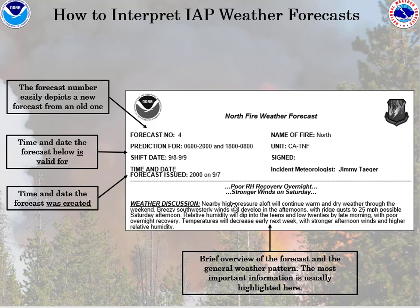The time and date the forecast was issued is usually the evening before — in this case it's 2000 on September 7th. Underneath here you can see a brief overview of the forecast and the general weather pattern. Usually the most important information is highlighted here, such as a headline of poor relative humidity recovery overnight and stronger winds on Saturday.